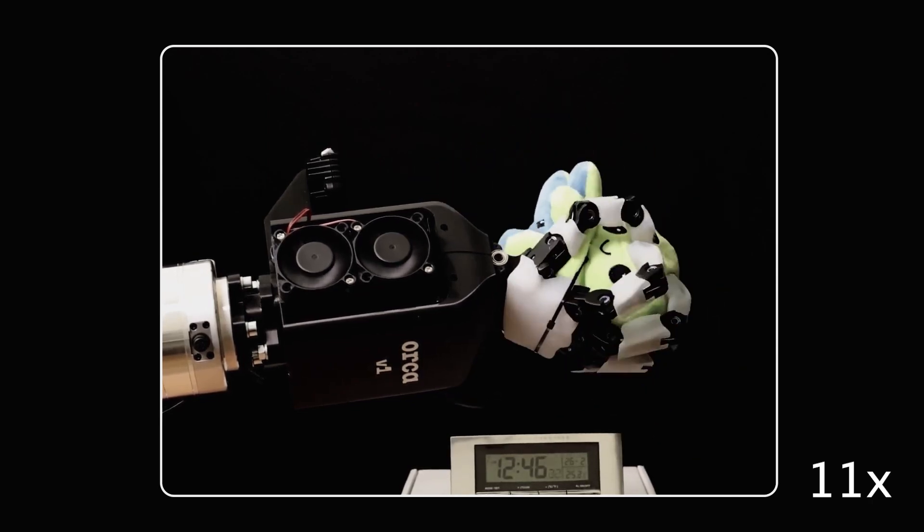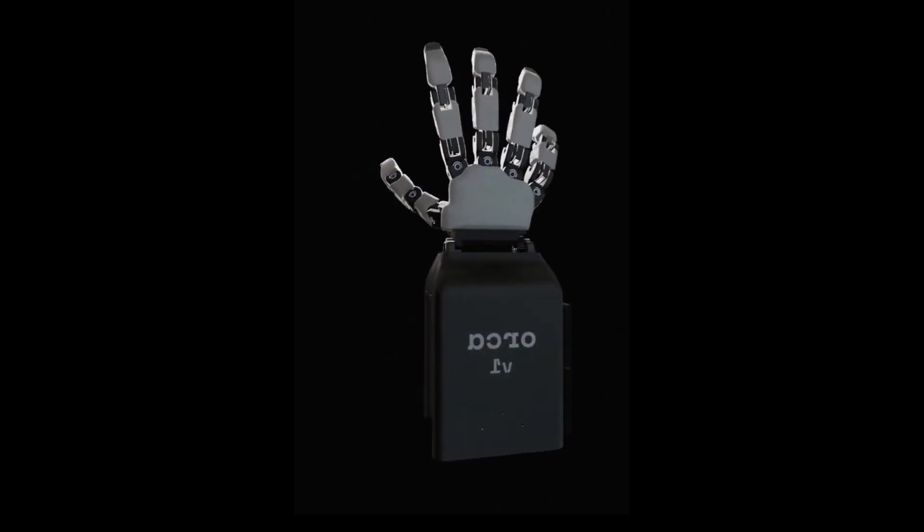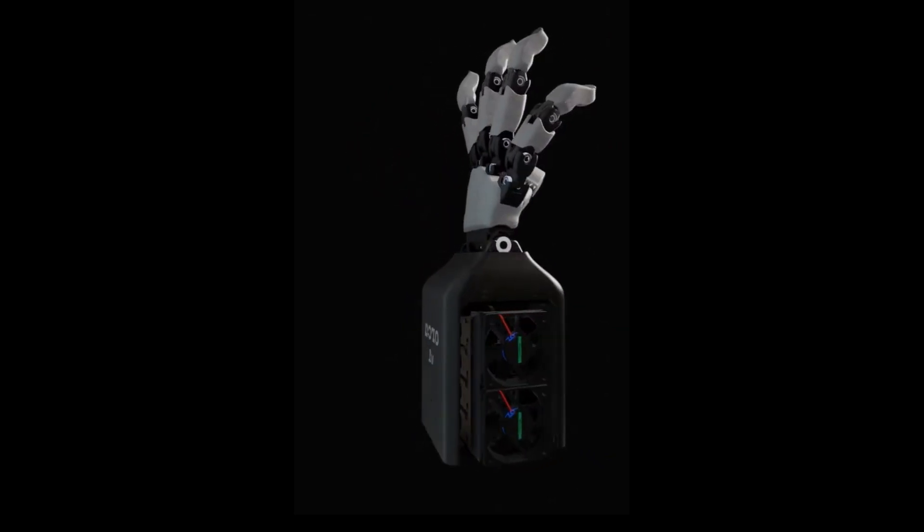So how does it actually work? Let's start with the mechanics. To ensure robustness and precise control, Orca hand relies on three key design tricks.